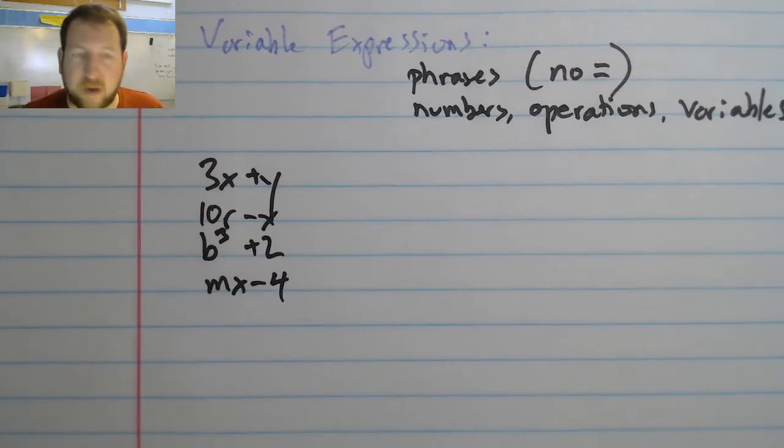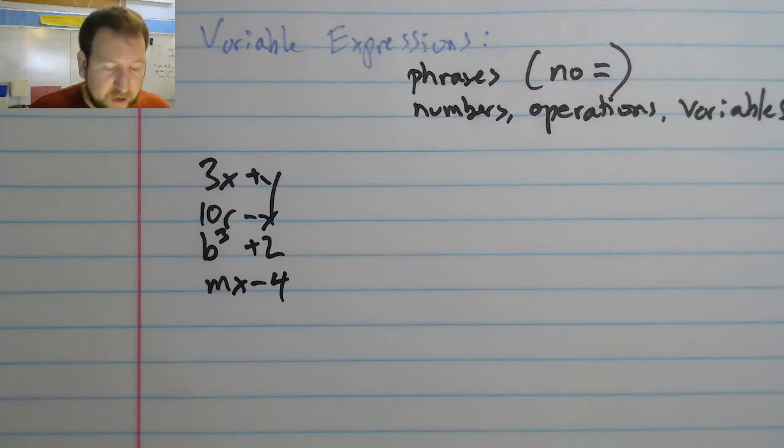Now some of these have two variables, some of them have one. There's no number requirement for it to be considered a variable expression. All it needs is to have at least a variable, operations, and numbers in it at some point. It doesn't actually need numbers; it could just be a variable as well.